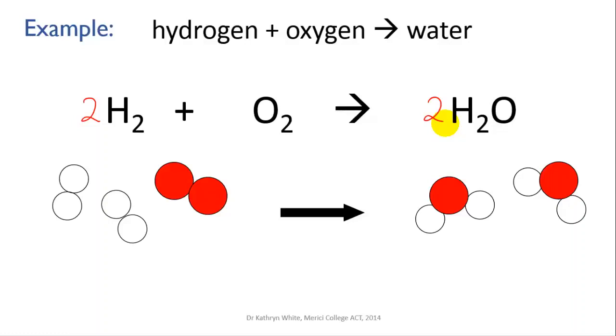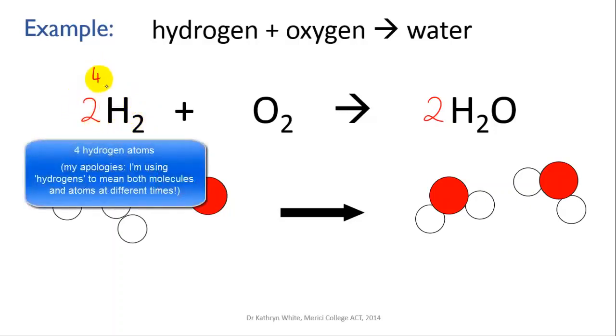So we'll check the hydrogens first. On the left, we have an H2 molecule. So that's two hydrogens in one molecule. And we have two of those molecules. So two times two is four hydrogens on the left.